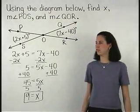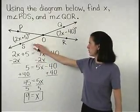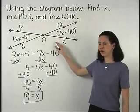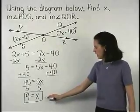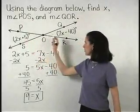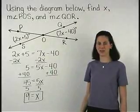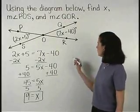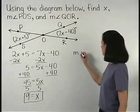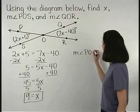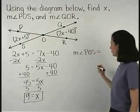To find the measures of angles POS and QOR, we simply plug a 9 back in for the x in either one of our angles. So the measure of angle POS, which is 2x plus 5,